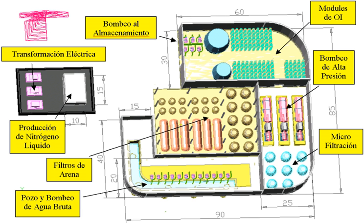Basically, two or more desalination processes are combined along with power production. Such facilities have been implemented in Saudi Arabia at Jeddah and Yanbu. A typical supercarrier in the U.S. military is capable of using nuclear power to desalinate 1,500,000 liters of water per day.